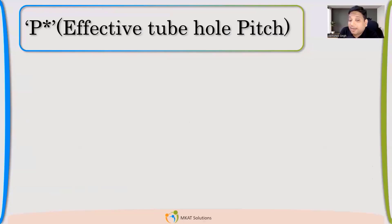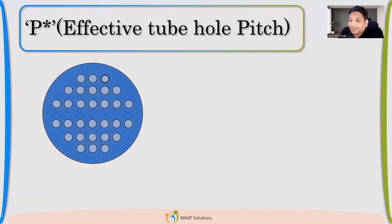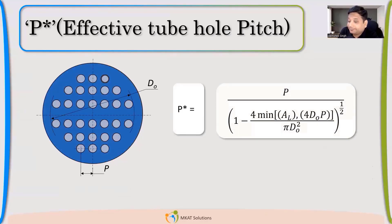Now we'll try to calculate the P*, which is effective tube hole pitch. P* is what? P we already know, P is the pitch. You can see here, distance between two holes, that is my pitch. But P*, I'm trying to calculate when tubes are also there and I'm trying to consider that material also as contributing to my strength.